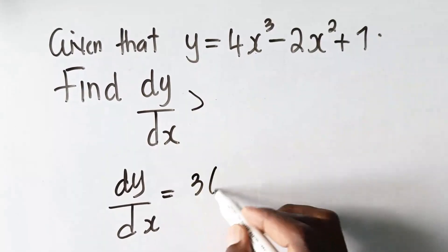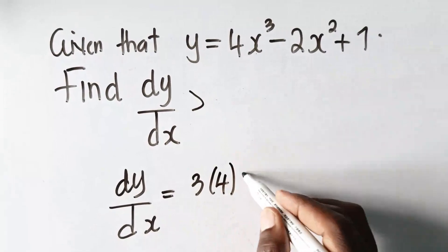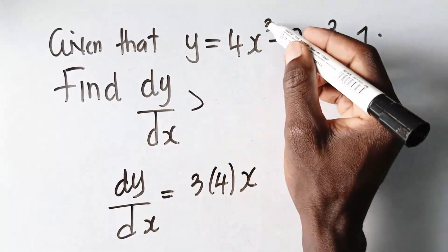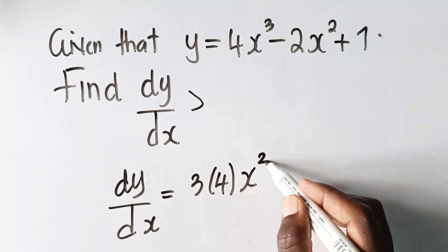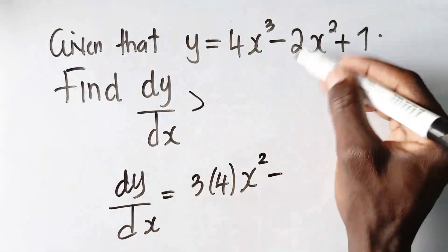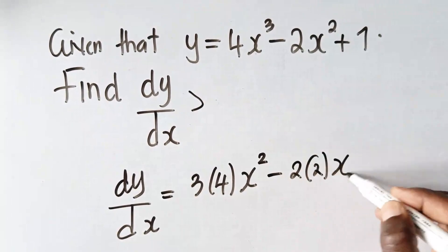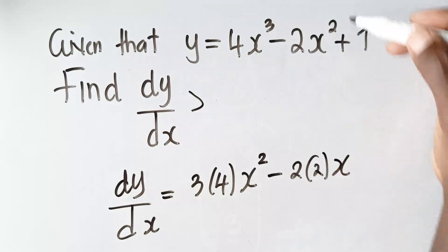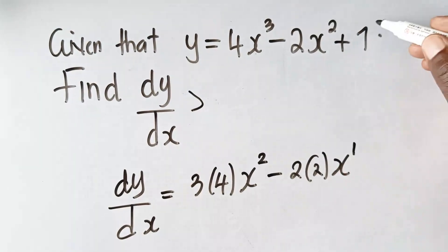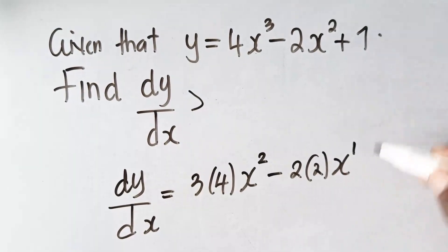We multiply it by 4. Then, there's x there. So we reduce this power by 1. What do you get? 2. Minus, this 2 brings down, is here. Then multiply it by 2. Then, if you reduce 2 by 1, what do you get? Just 1, right? The derivative of a constant is just 0.